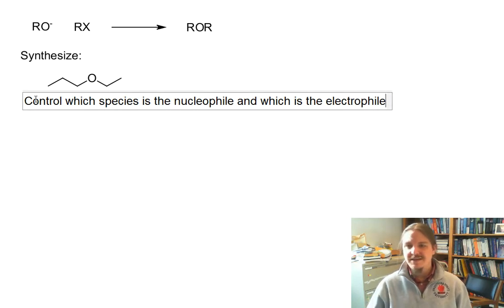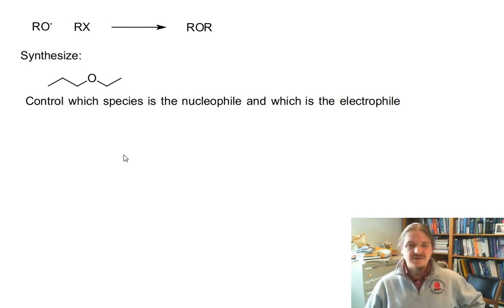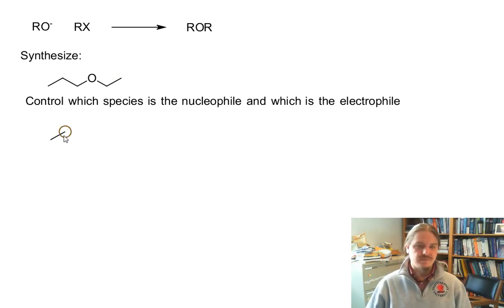We're going to return to this theme in the discussion of other kinds of reactions. In this particular example, we can have either part of the molecule come from the alkoxide anion.